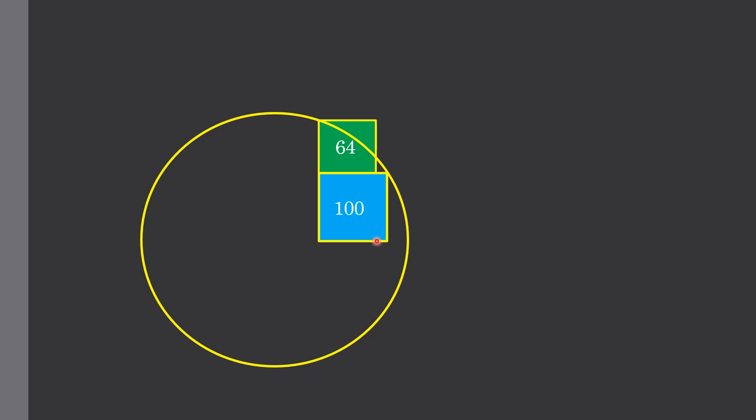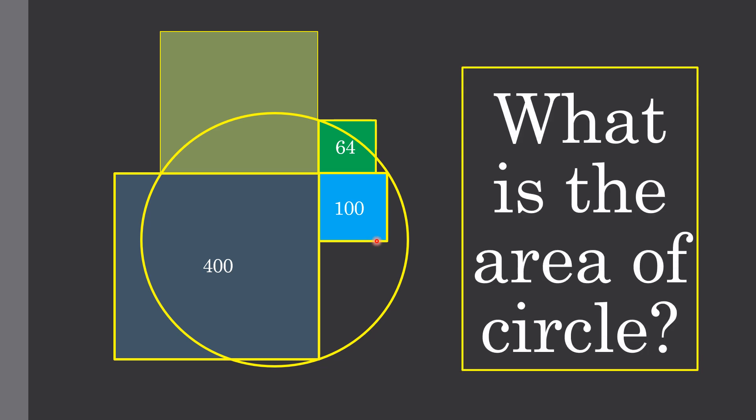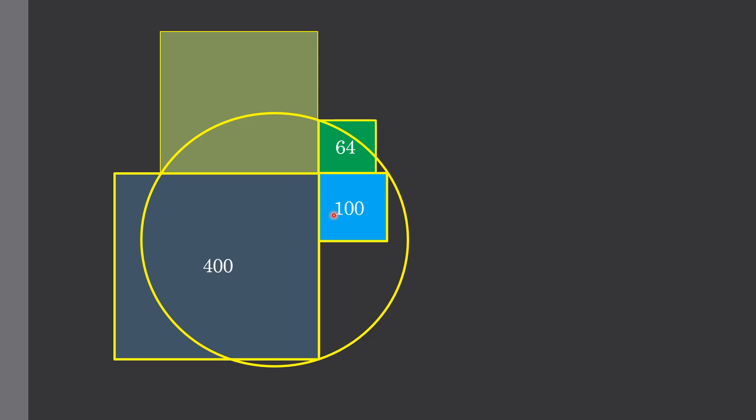The third square is this larger square which has an area equal to 400 square units, while the fourth square is given with no information. By these given information, we have to find the area of this circle. Let's move towards the solution.